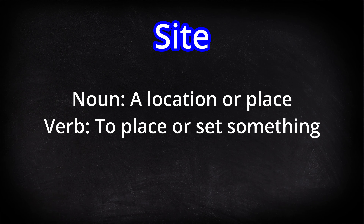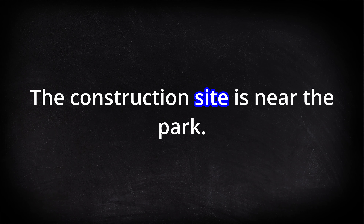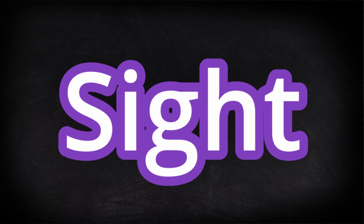Next, site — S-I-T-E — is a noun meaning a location or place. For example, construction workers go to a different job site each day — one day a road, the next a building downtown. Or if you lose your phone, an app might direct you to the site where your phone is located. Example: 'The construction site is near the park.'